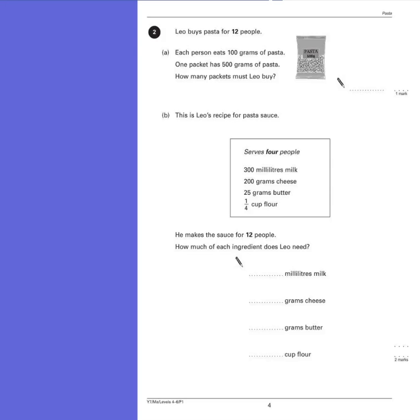Question 2. Leo buys pasta for 12 people. Part A: Each person eats 100g of pasta. One packet has 500g of pasta. How many packets must Leo buy?